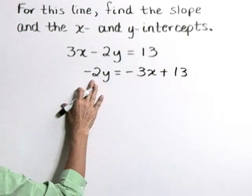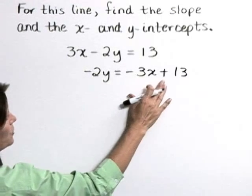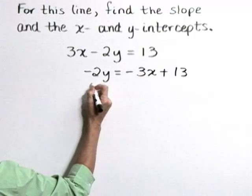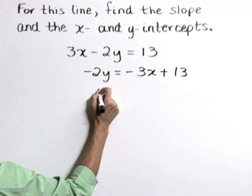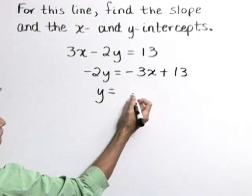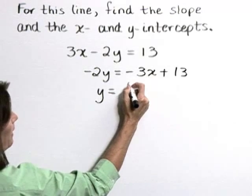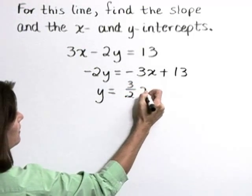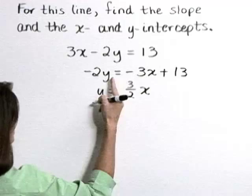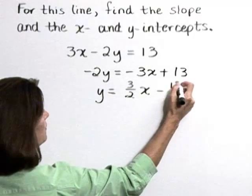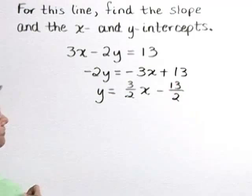Now divide everything through by negative 2. The left side divided by negative 2 gives y. Negative 3x divided by negative 2 gives a positive 3 halves x, and 13 divided by negative 2 gives negative 13 halves.